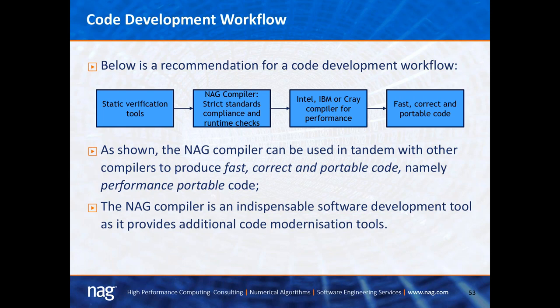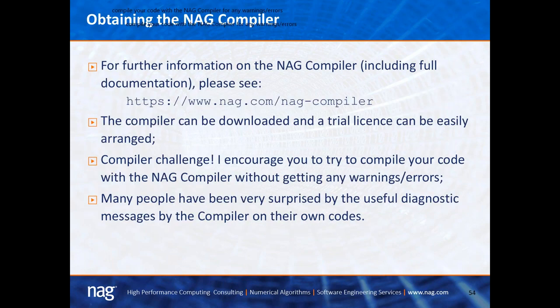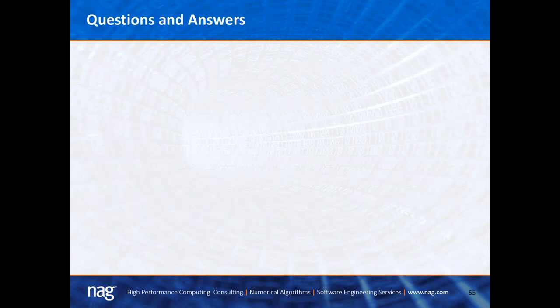If you're interested in the NAG compiler, you can read about it from the URL shown and download a trial version — a trial key can be created easily. I'd like to end the presentation with a compiler challenge: I encourage you to try and compile your code with the NAG compiler without getting any warnings or errors. I run a Fortran workshop and many people have been very surprised by the usefulness of the diagnostic messages created by the compiler. Now I'll move on to questions and answers.